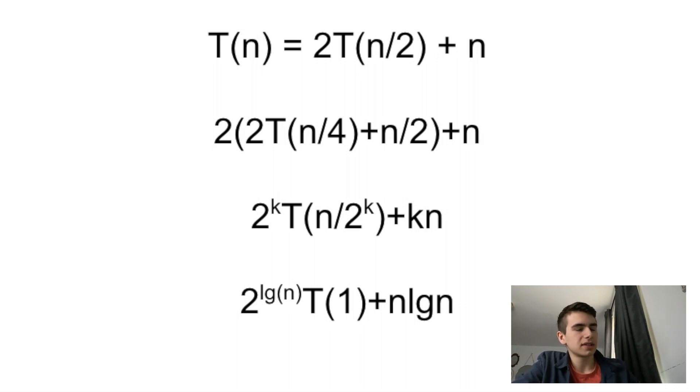We get 2^(log n) * T(1), which is just one, plus n log n. You'll notice that the 2^(log n) is just n, if you know your log rules, which I hope you do if you're taking an algorithms class. So you have n versus n log n, which is bigger, n log n.